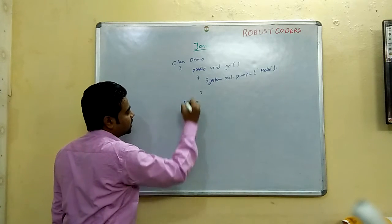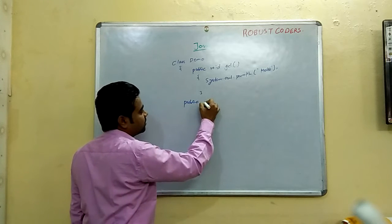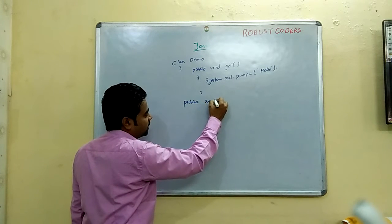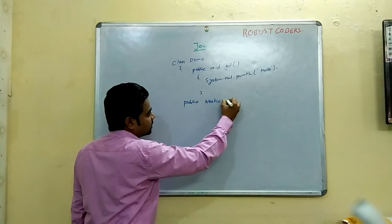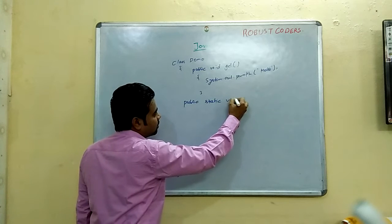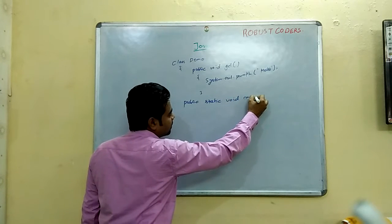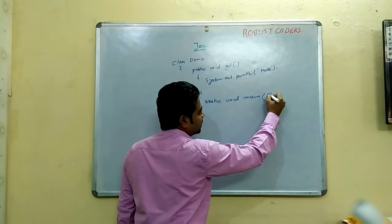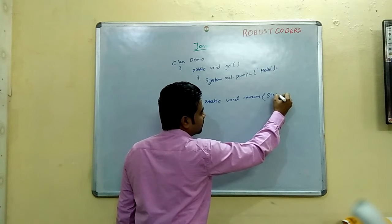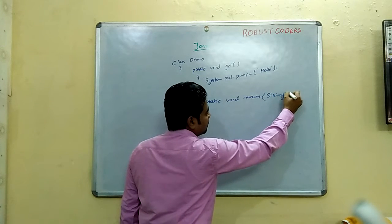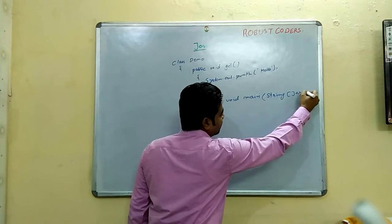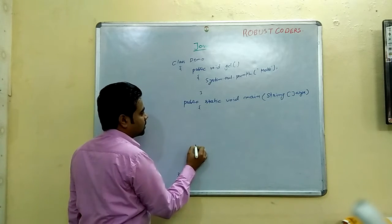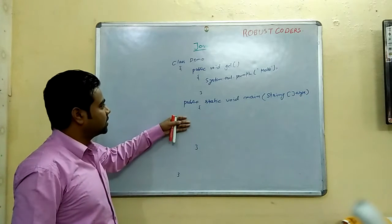The main method is a compulsory method. Because if this method doesn't exist, the JVM will not work. The syntax is: public static void main, and then String array args. This method is called by JVM.